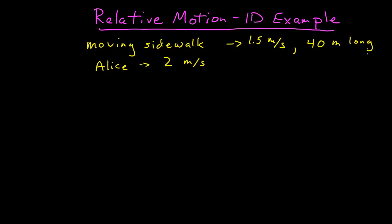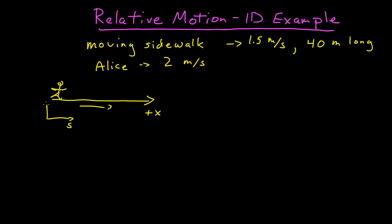Let's take a look and get a picture with a coordinate system — let's call this positive x. The sidewalk is moving in the positive x direction. We have our sidewalk coordinate system moving along at 1.5 meters per second relative to the ground, and then there's a ground coordinate system that is at rest with the earth.